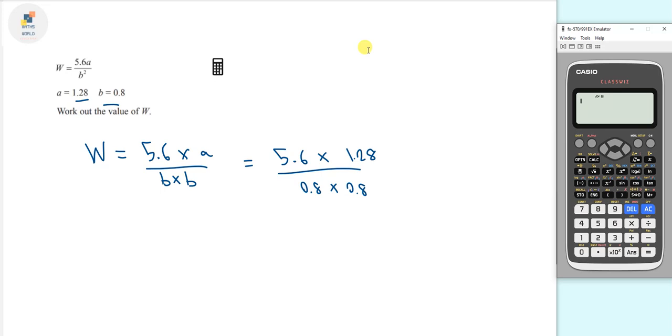We've got the calculator out, so we can actually work this out. To work out W, first we can work out 5.6 times 1.28, then we can divide our answer by 0.8 times 0.8. We just want to remember to put brackets in here as well just to stay on the safe side. Our final answer is 11.2, and since no units are given for anything in the question, that will be our final answer.